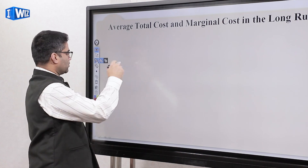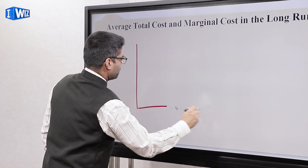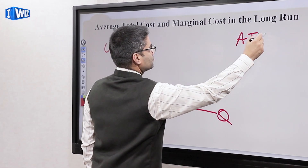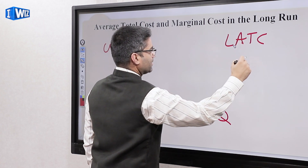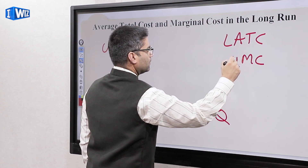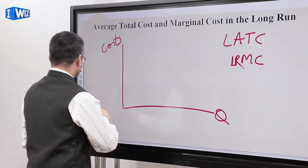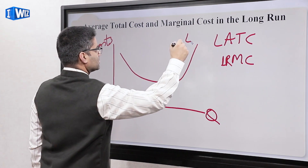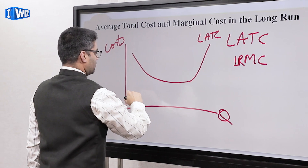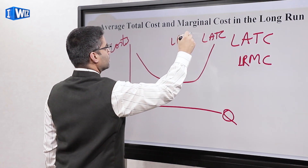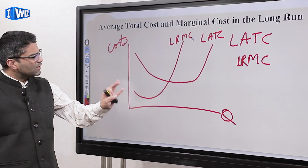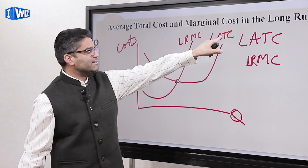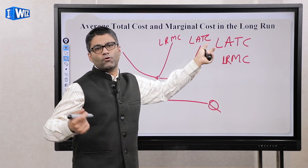Let's graph it. The graph looks very similar to the previous one: quantity on the x-axis, costs on the vertical axis. We have the long run average total cost (LRAC) and the long run marginal cost (LRMC), which still have the same U-shapes. The marginal cost curve passes through the minimum of ATC — you know that from before. This is the same ATC as before but it's in the long run, so the curves look the same.